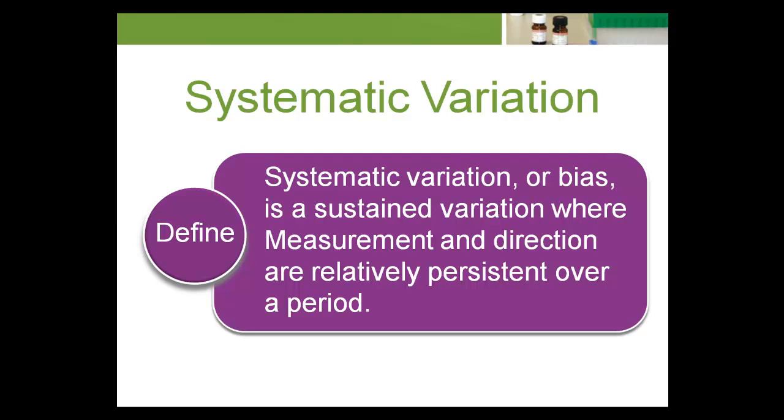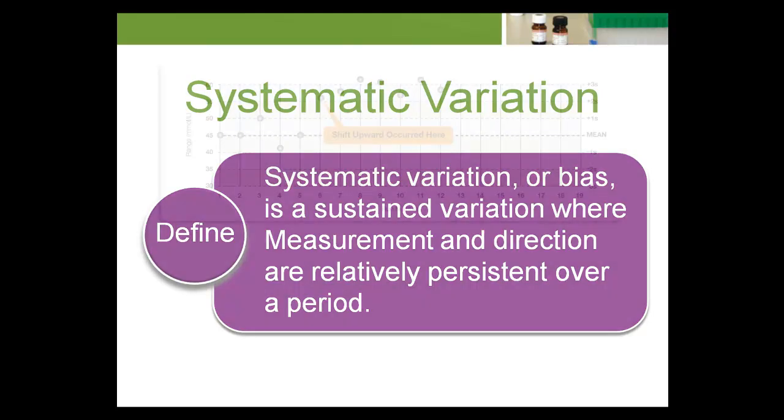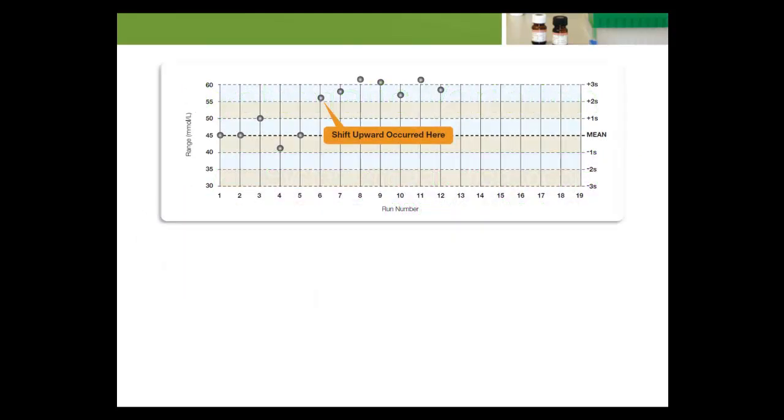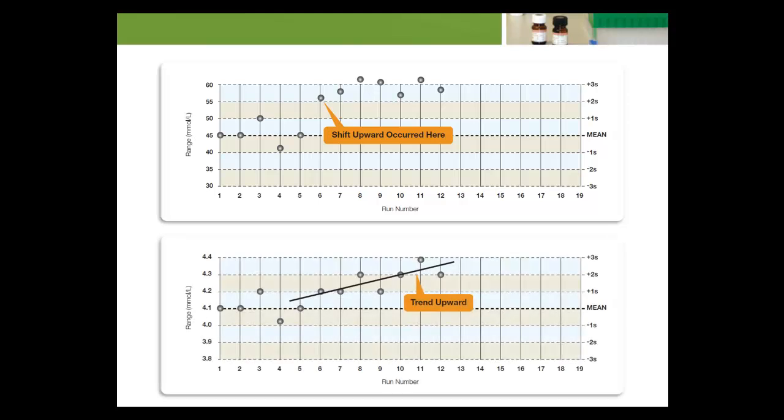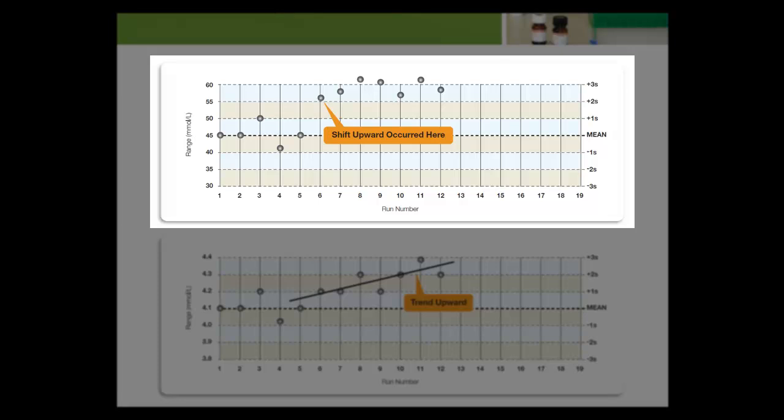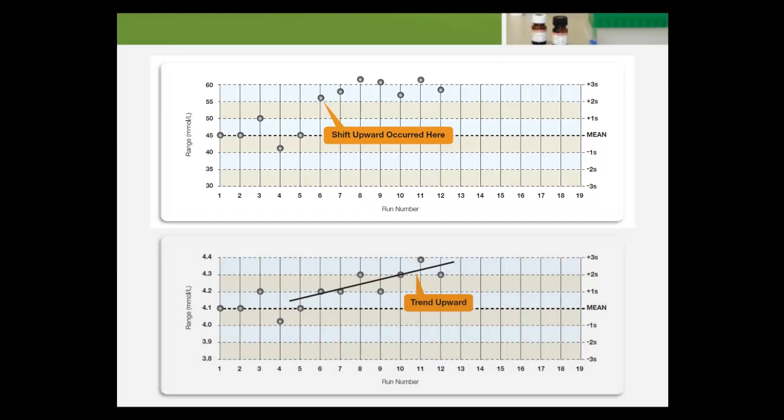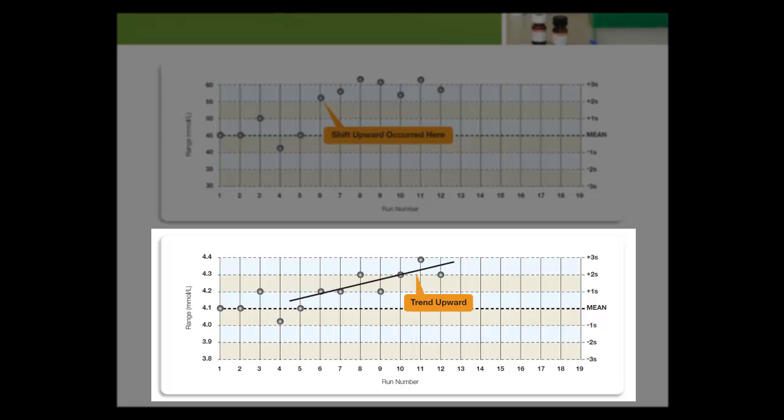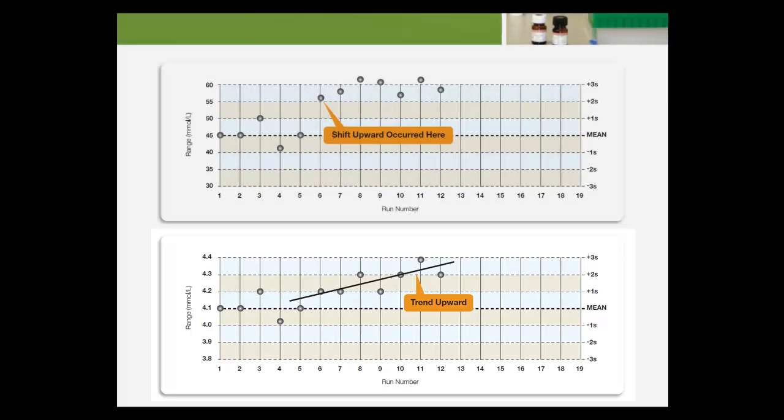The second form of analytical variation is systematic variation. The terms systematic variation and bias can be interchanged. Systematic variation or bias is a sustained variation where measurement and direction are relatively persistent over a period. Both shifts and trends can be an expression of bias. A shift is a sudden and persistent increase or decrease in QC values. A trend is a gradual increase or decrease in QC values that eventually stabilizes.